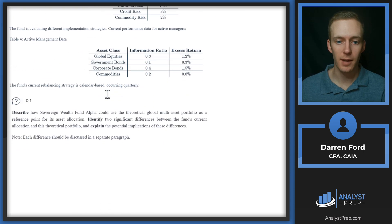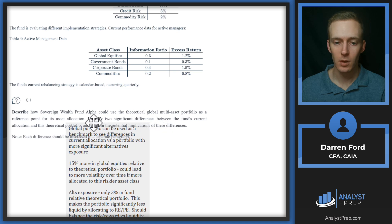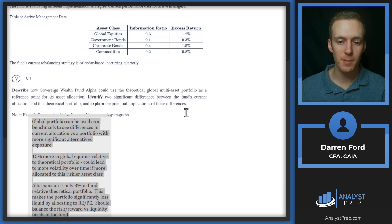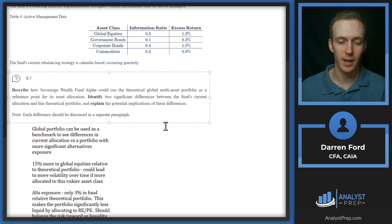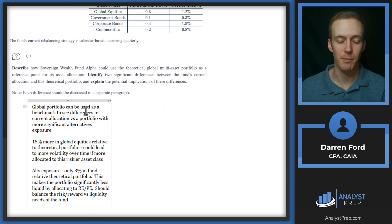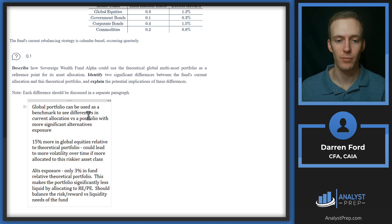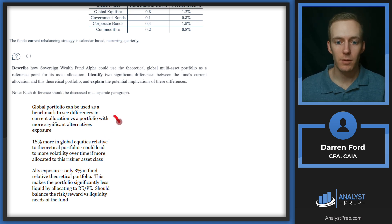Let's start pulling in our answer. Typically, if we're going to use something as a reference, a good way to look at that is using it as a benchmark. This is going to show us the differences in how the current allocation versus the global portfolio with more significant alternatives exposure behave differently over time. That's the first checkmark. And then for the other two points — two significant differences and explain.